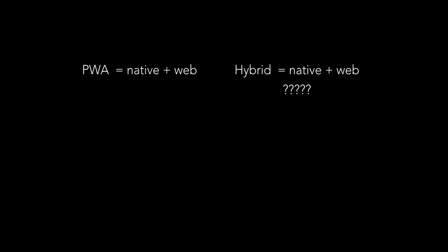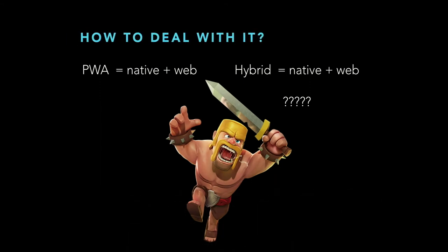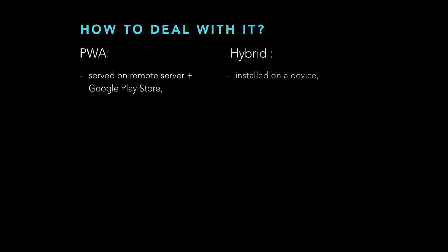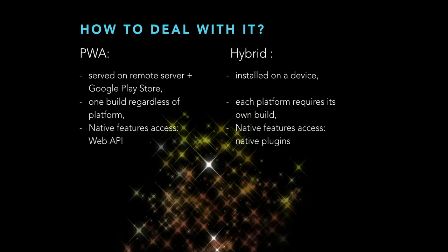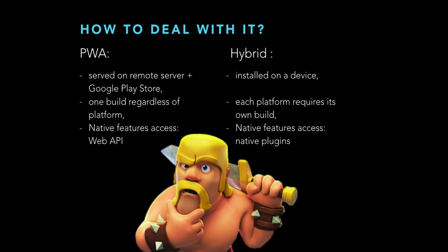Progressive web apps and hybrid apps both combine native and web apps — so what's the difference? The first and most important difference is distribution. Progressive web apps are still web apps served on a remote server, and now you also have access via the Google Play Store. For hybrid apps, it's similar to native apps — you install it and it's distributed through the Play Store. Regarding the build process, for PWA you have only one build and it works regardless of platform. For hybrid apps, you need a separate build for each platform. To apply native features in PWA, you use modern web APIs; for hybrid apps, you apply native plugins and must verify that each plugin is supported on your target platform. For PWA, you need to check that the feature is supported by the browser and platform.